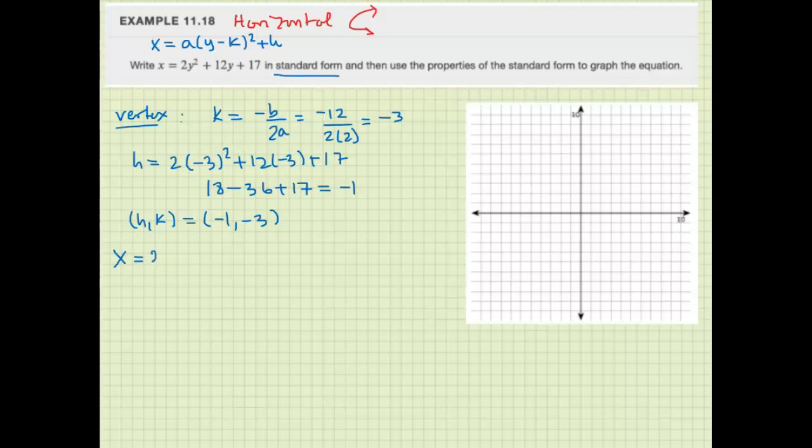So a is 2. Y minus k would be y plus 3 squared. Then plus h would be minus 1.